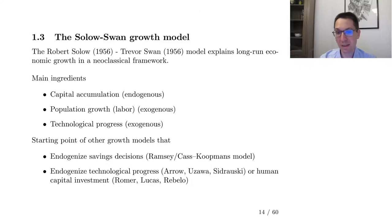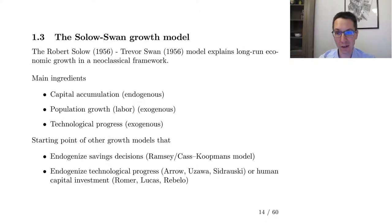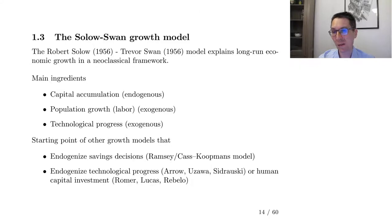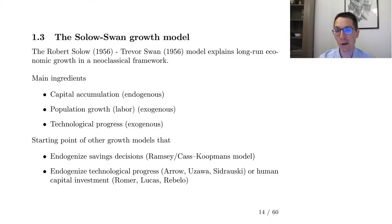In contrast, we are going to add population growth and technological progress, but these are actually exogenous. It just means that they come from outside the model and we don't really care about what causes them. We simply postulate that they each grow at a certain rate each period without having to say why.